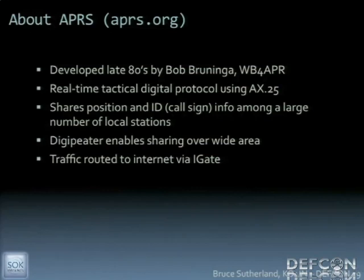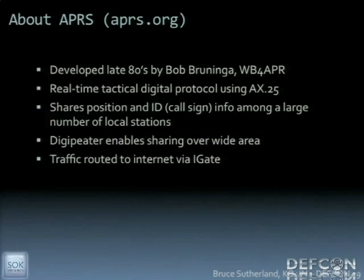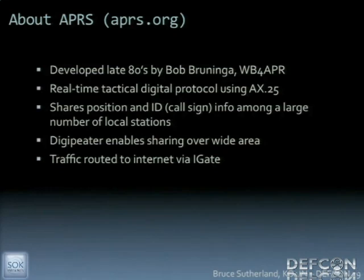Another necessary element is a digipeater — a repeater station that listens for all traffic and then repeats it back out. These are usually located on a tower or a mountain; in our case, it's going to be a satellite. That's good for larger events like car races where everything is spread out. Another component is called an iGate, which is a link between the radio part of the network and the internet. APRS doesn't use TCP/IP — it uses X.25 — and the iGate does the translation between the two. There happens to be one on the International Space Station, which is good for us.